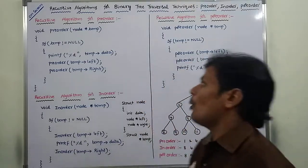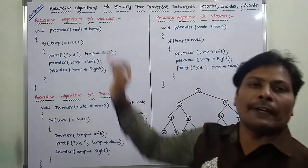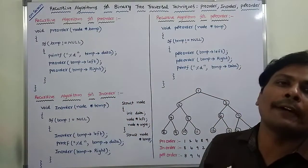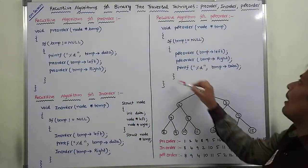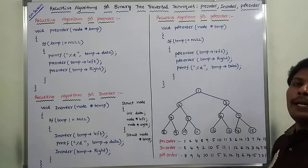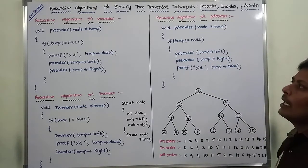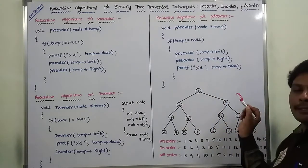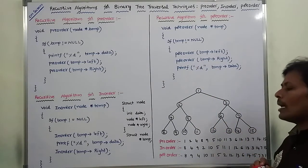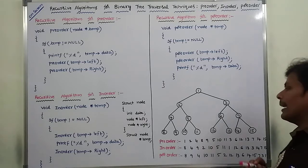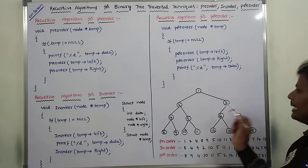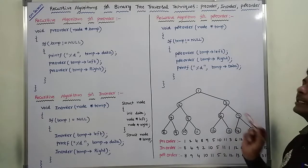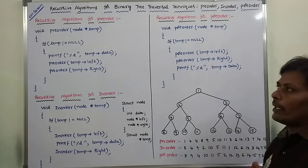Now in this video, we have to discuss about recursive algorithms for pre-order, in-order, and post-order traversals. This is the recursive algorithm for pre-order, this is the recursive algorithm for in-order, and this is the recursive algorithm for post-order. Now apply these three algorithms to this tree and find the pre-order, in-order, and post-order traversal results.